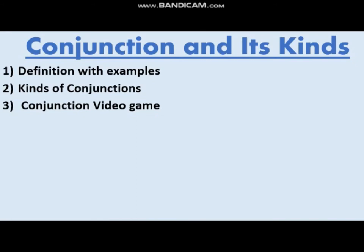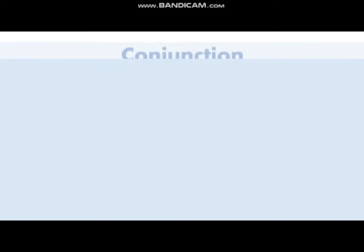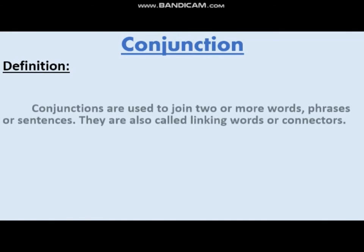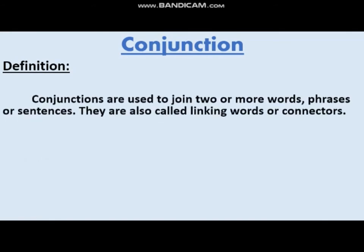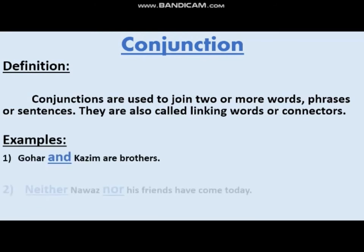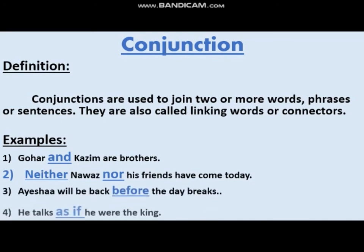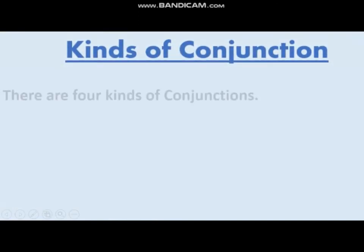'Aisha will be back before the daybreak' — here 'before' is a conjunction which shows time. 'He talks as if he were the king' — 'as if' shows imagination and also joins two clauses together. That is why they are called conjunctions. There are four kinds of conjunctions: coordinating conjunctions, correlative conjunctions, subordinating conjunctions, and compound conjunctions.